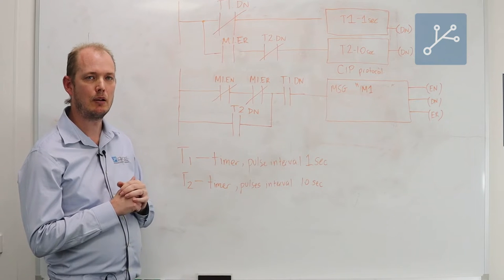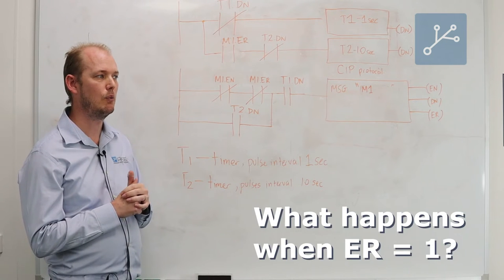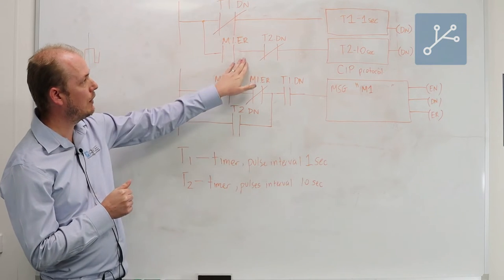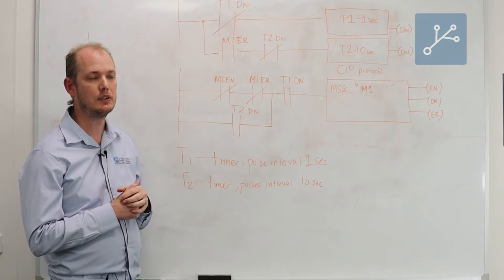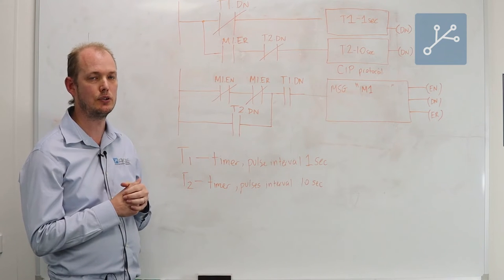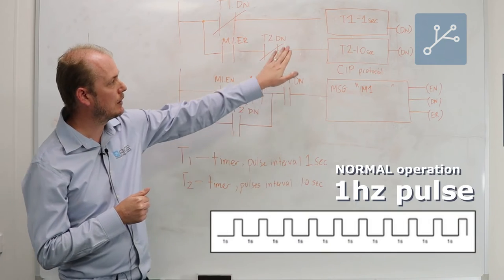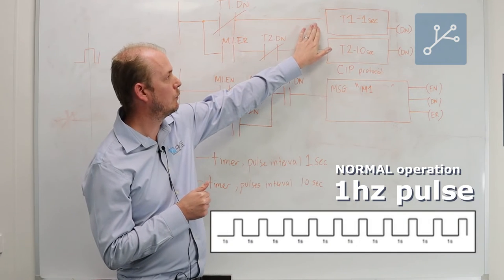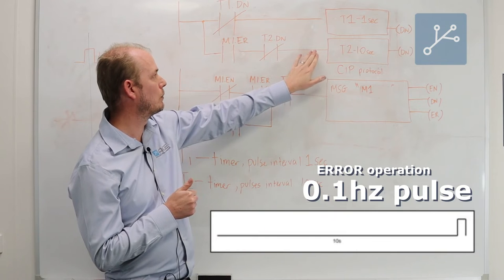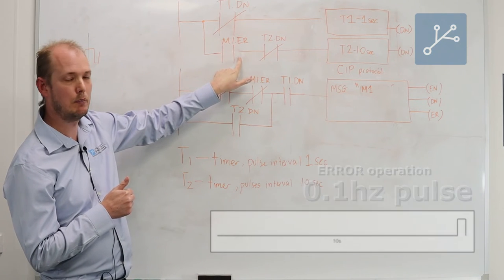So the question becomes: what happens when we get the error bit? What do we do? In this situation we have two timers which are controlling the speed or the interval between message execution. So we have a one second timer for normal operation and a ten second timer when there's a problem with the message instruction.